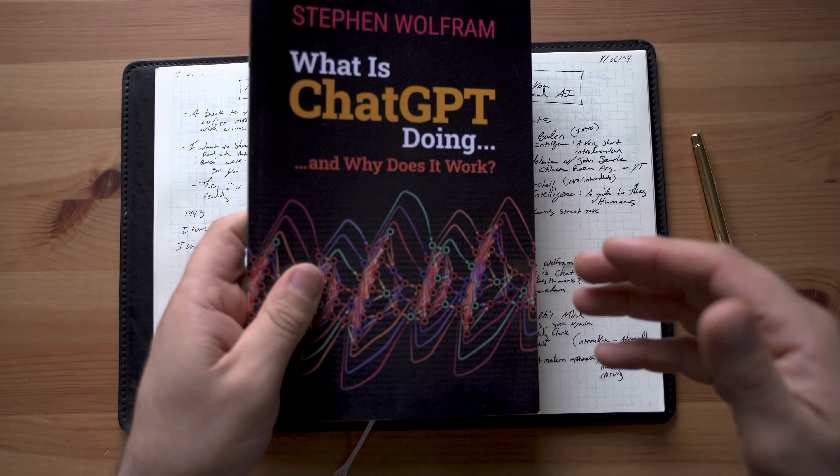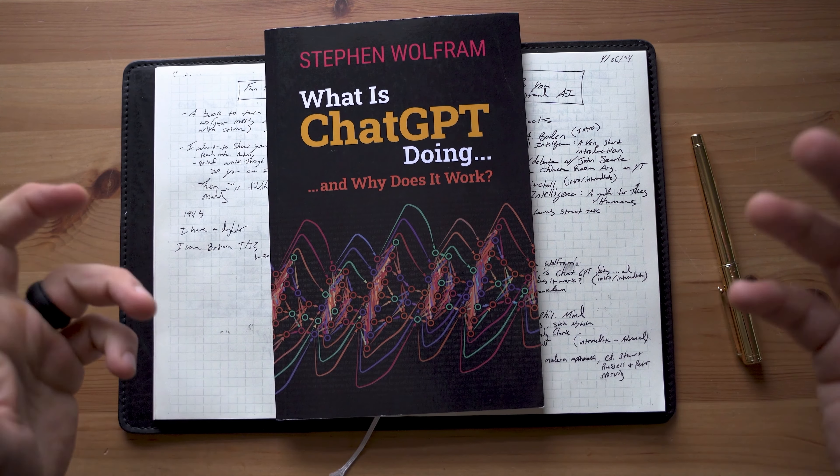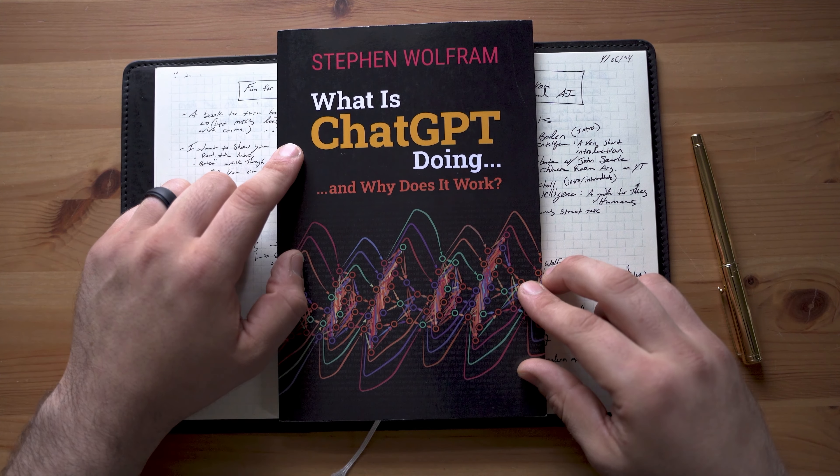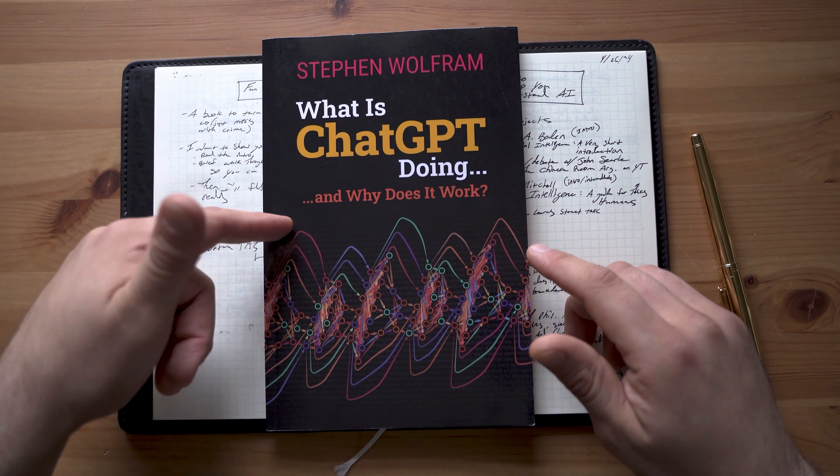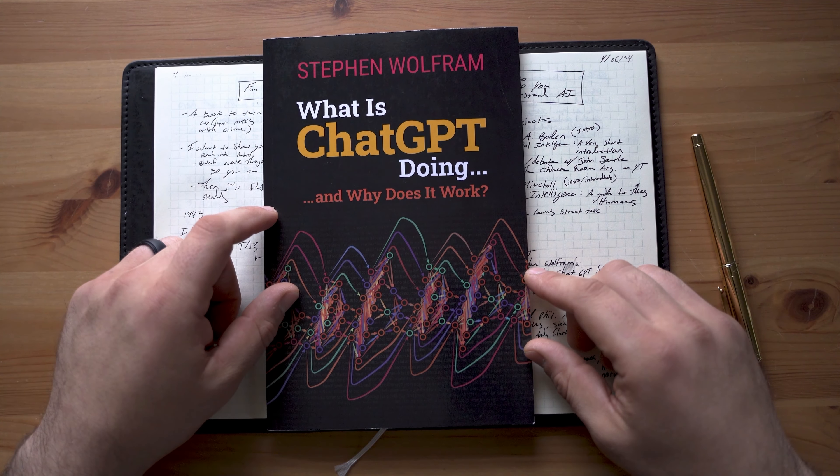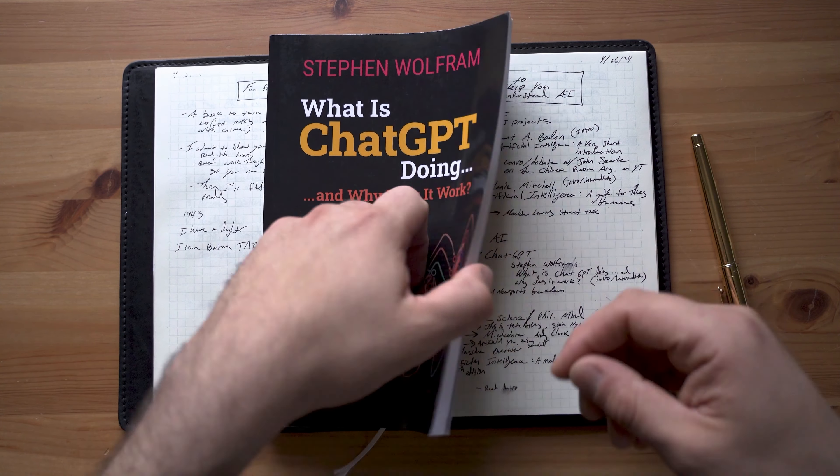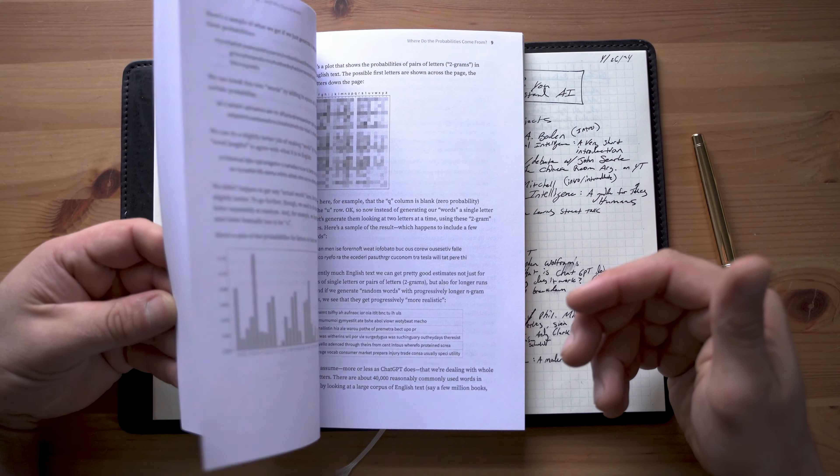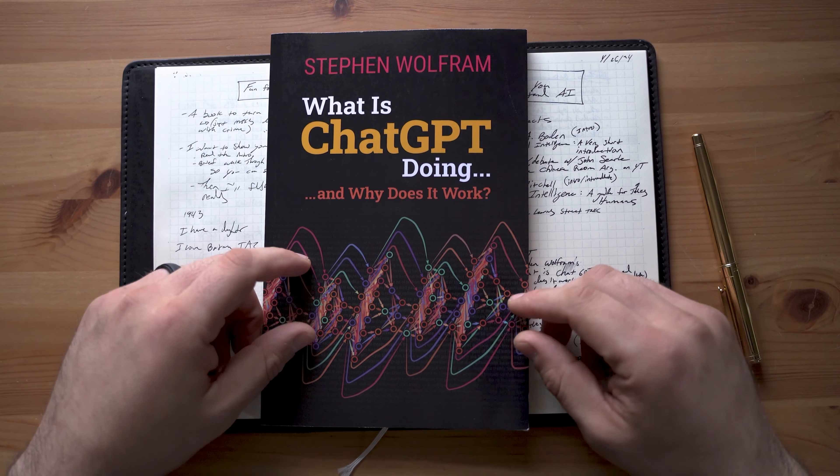But those two books don't quite get us all the way up to today with OpenAI and ChatGPT. So I want to recommend Stephen Wolfram's book, What is ChatGPT Doing and Why Does It Work? Now he first came out with this as a blog post. You can probably still find that, but I wanted to grab the book because I like making marginal notes. I haven't marked this one up yet, but the blog post was super helpful in helping me conceptualize large language models.